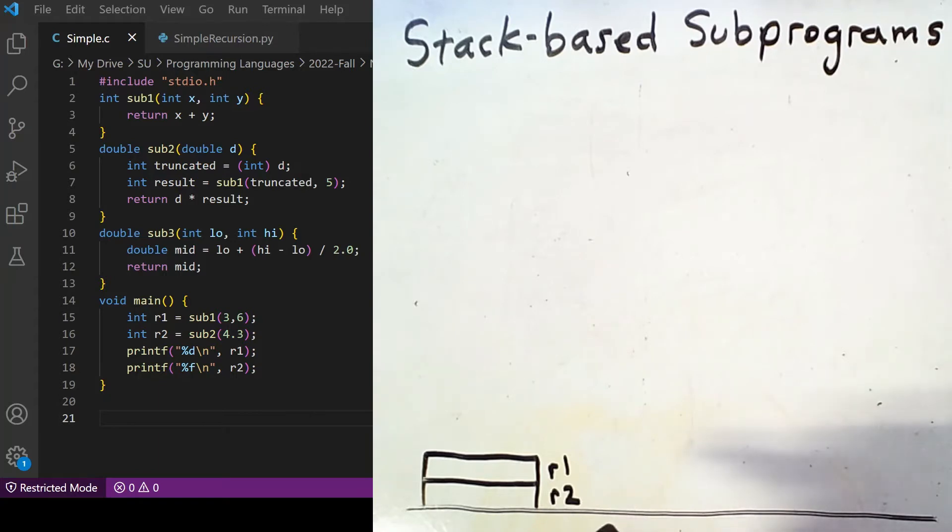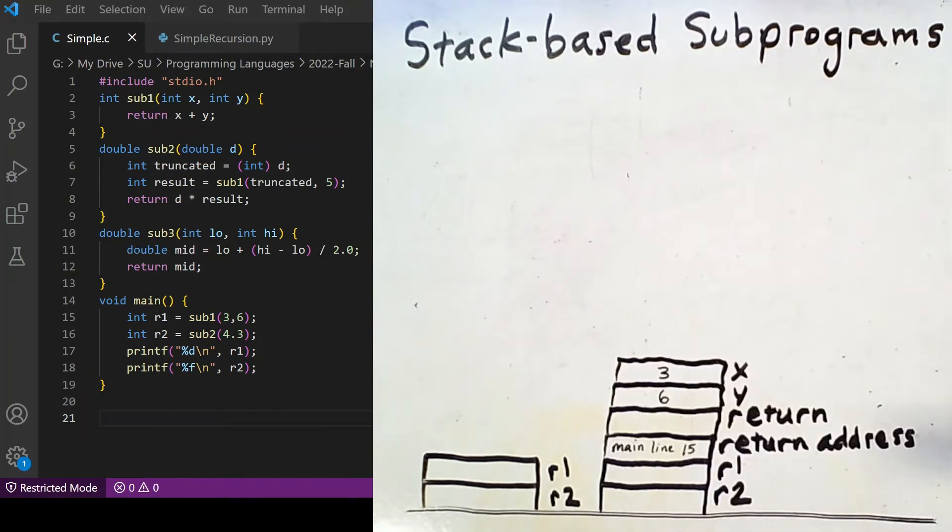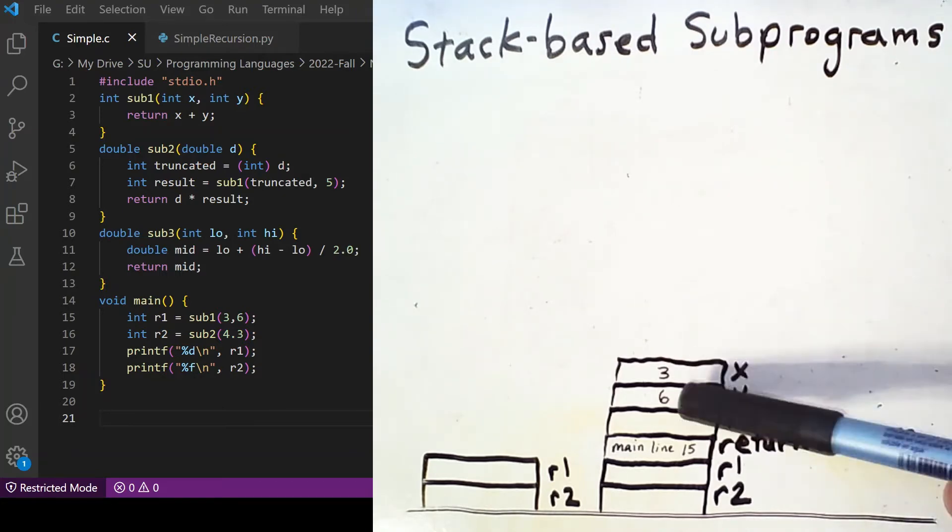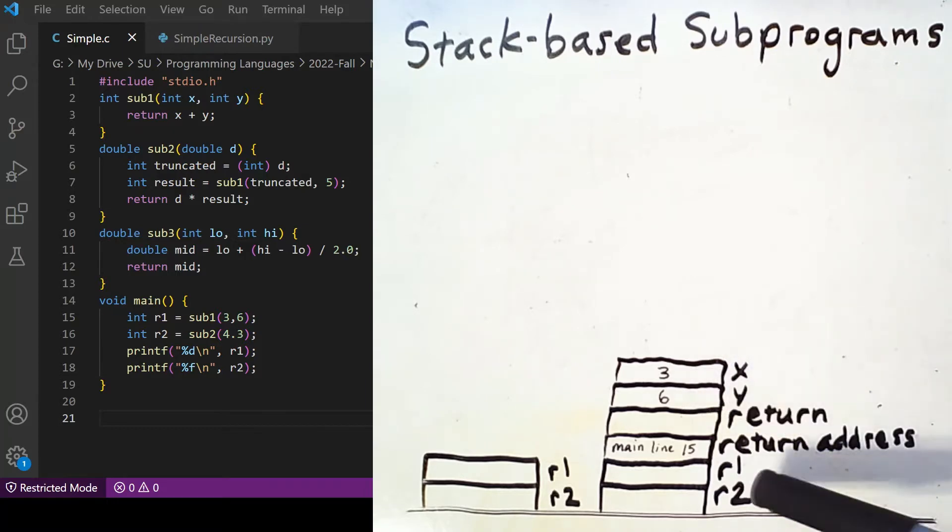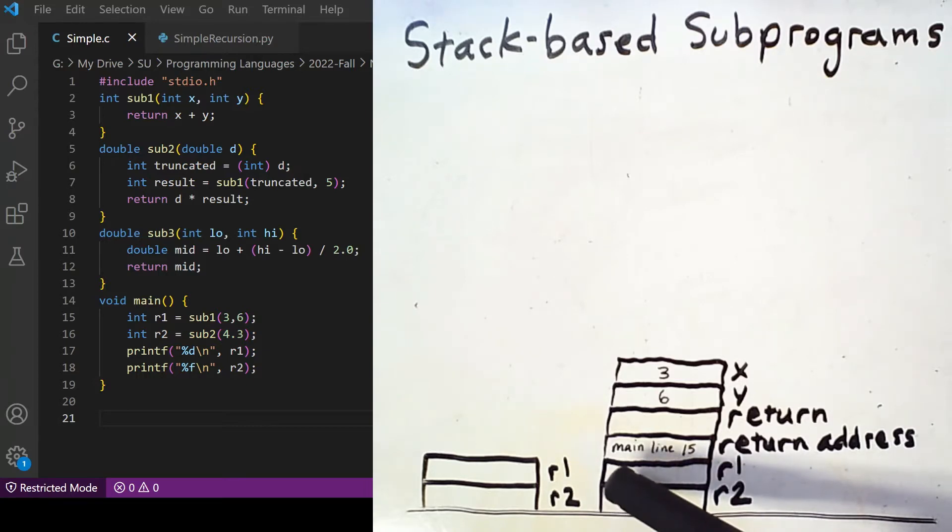When the main function calls sub-1, the next activation record goes on top of this. Notice that the general structure of the activation record looks the same as in the previous video. And as before, at the point when sub-1 is called, we populate the parameters x and y with their actual values, 3 and 6, and we specify the return address, which I'm writing this time as main function line 15.